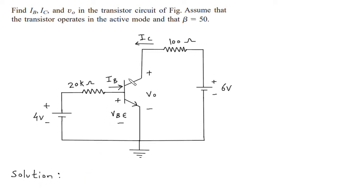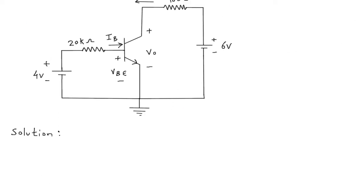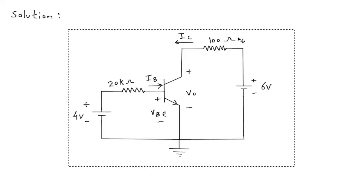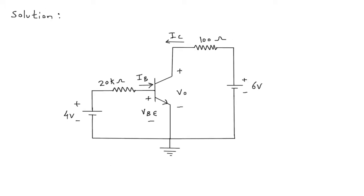Solution: we have to find IB, IC, and VO. In active mode, VBE is equal to 0.7V. First we will redraw the circuit. Let's say this is loop number 1 and this is loop number 2.